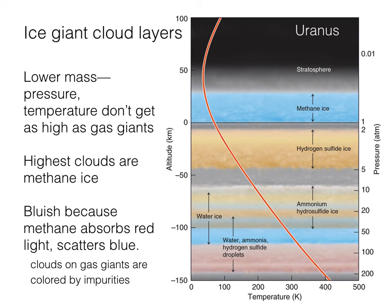What about the ice giant cloud layers? Here we're looking at Uranus, and the temperature and pressure increase downward as we saw with the gas giants. But because the ice giants have less mass, they have less gravity. And because they have less gravity, the values of these pressures and temperatures just don't increase as high as they do for the gas giants. Therefore the highest clouds that we see are of a very different composition — they're made mostly of methane ice, which absorbs the redder wavelengths of light. That leaves the blue wavelengths to be scattered in the atmosphere, giving the planets their bluish-green appearance.